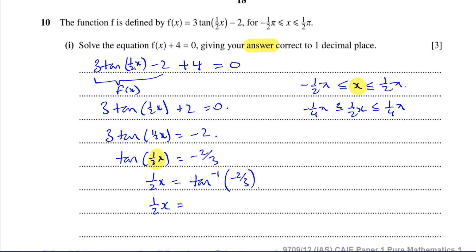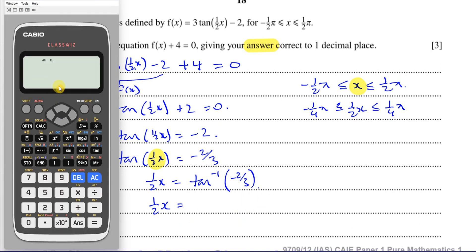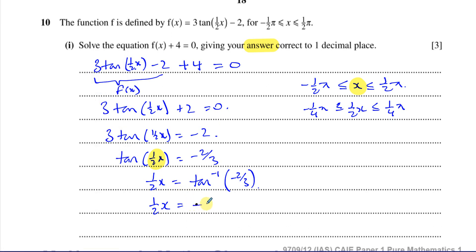We're going to take the calculator and make sure we are in radian mode. If it wasn't, I'll press shift menu, angle unit, and 2 for radians. Then I'm going to put inverse tan of -2/3. That gives me an answer: -0.5888. Now we want to give our answer to one decimal place, but I'm going to leave it to three decimal places until the last step. That's -0.5888, so there's the first solution.